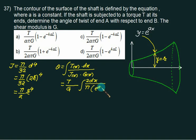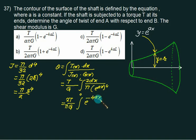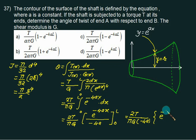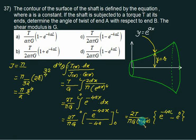Substituting J(x) = π/2 × e^(4ax), the integral becomes θ = (2T/πG) ∫₀ᴸ e^(−4ax) dx. Solving: θ = (2T/πG) × [e^(−4ax)/(−4a)]₀ᴸ = (2T/πG) × (1/(−4a)) × (e^(−4aL) − 1). Adjusting signs by swapping terms: θ = T/(πGa) × (1 − e^(−4aL)) / 2, giving the final answer as θ = (T/πGa) × (1 − e^(−4aL)) / 2.